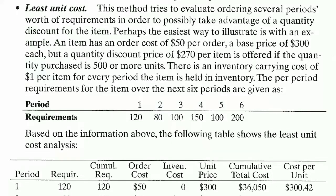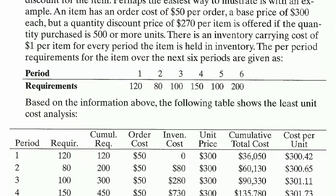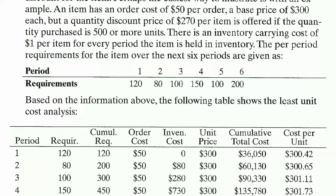Least unit cost: this method tries to evaluate ordering several periods' worth of requirements in order to possibly take advantage of a quantity discount for the item. An item has an order cost of $50 per order, a base price of $300 each, but a quantity discount price of $270 per item is offered if the quantity purchased is 500 or more units. There is an inventory carrying cost of $1 per item for every period the item is held in inventory.